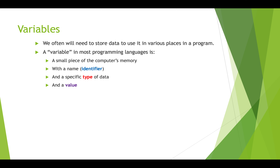We need places to store data to use while we're running our programs because we have to manipulate data to do anything interesting. A variable is what we use to store data, and you can think of it as a small piece of memory in the computer, or a box. You can put things in, take stuff out, and put other things in — so you can change what's inside the box, but the size of the box is constant.